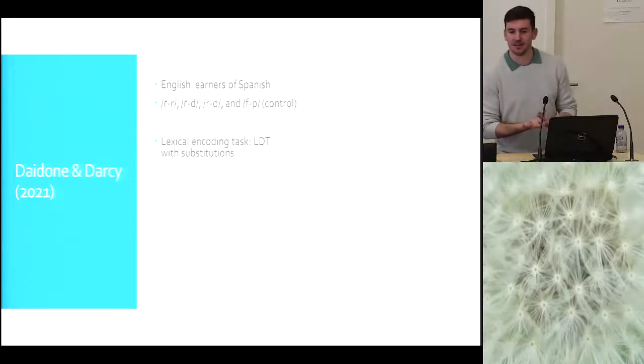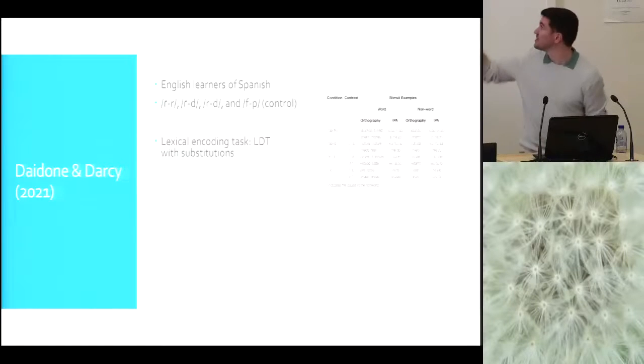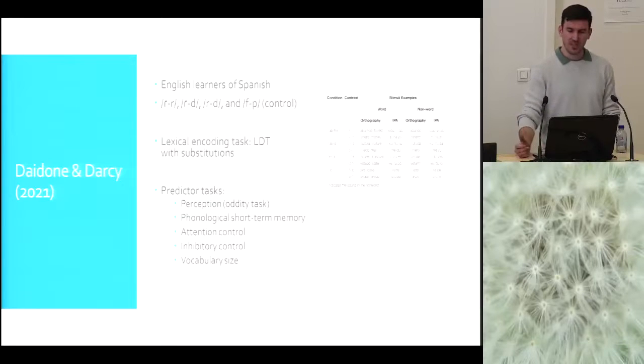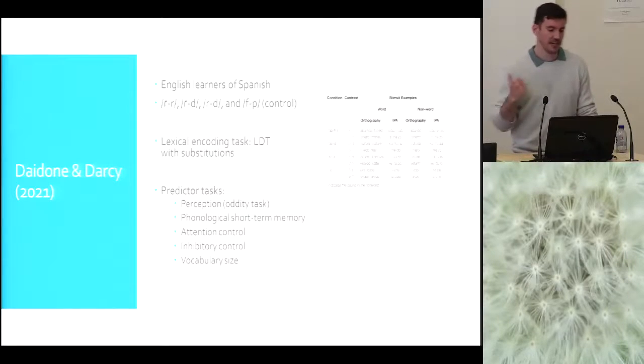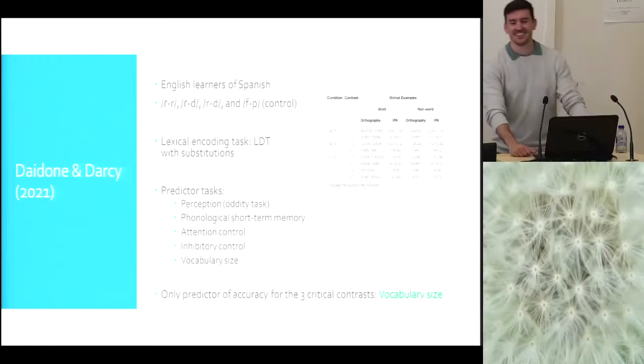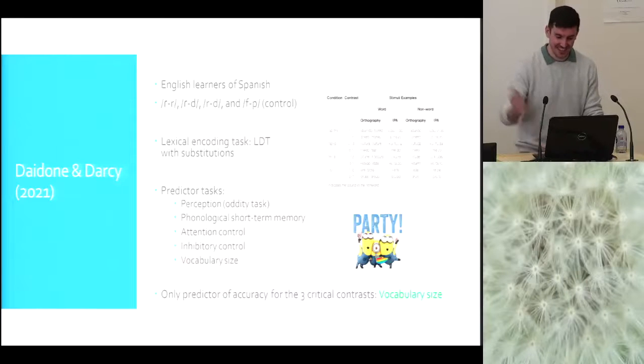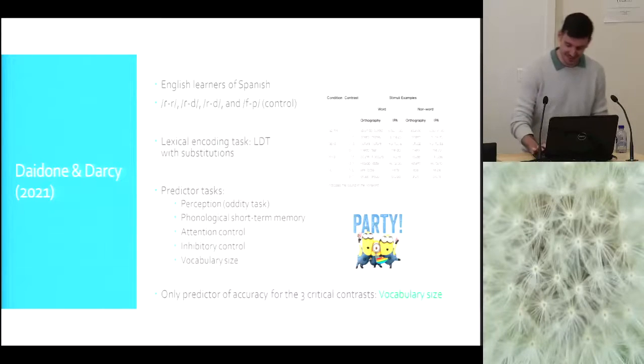I found that vocabulary size matters. And I was very excited about it. But I was even more excited when this paper by Daniel and Isabel came out. Because they were doing something very similar. They had English learners of Spanish. Three consonant contrasts, and a control contrast. They were using a very similar task. Also, here you can see aburrido and aburrido. And for the tap trill. They wanted to know, what are the best predictors of lexical encoding? What predictors matter? They had several measures. They had perception too. They had phonological short-term memory, attention control, inhibitory control, and vocabulary size. And, want to know what happened? The only predictor of accuracy for the three critical contrasts was vocabulary size. And not perception. That for me was a reason to party. It seems that my results were not a fluke. There seems to be something there.